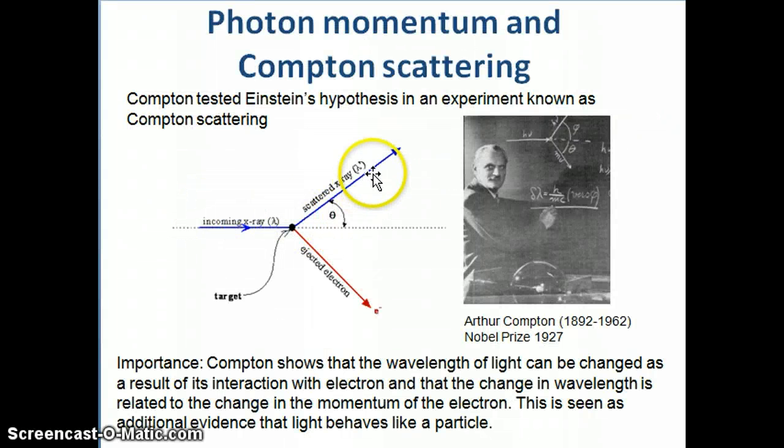He was able to then correlate the change in wavelength to the actual momentum of the electron, which was considered a particle. So there's clear transfer of momentum from something that was thought of as a wave, x-ray, to a particle. And as a result, this basically is additional information or additional evidence or additional confirmation that light is, in fact, a particle, as well as a wave. We know that it's a wave, but now there's a couple of experiments like the photoelectric effect and the Compton scattering that show that light is actually also a particle.